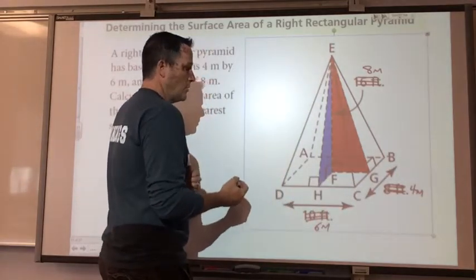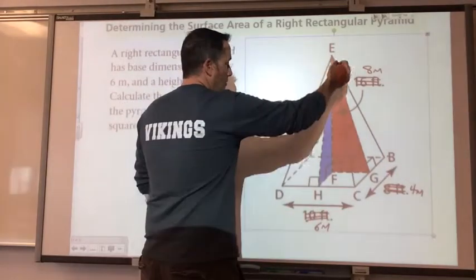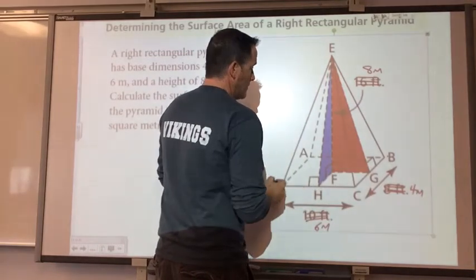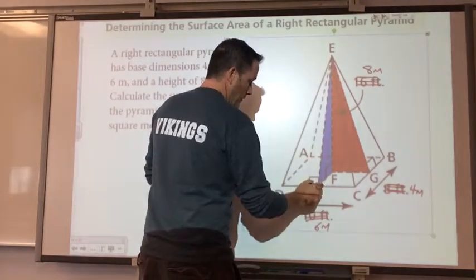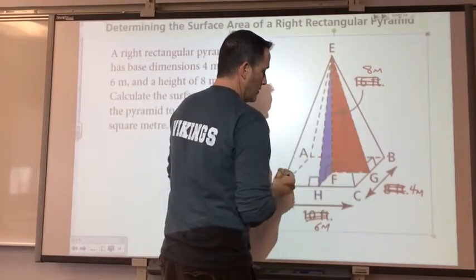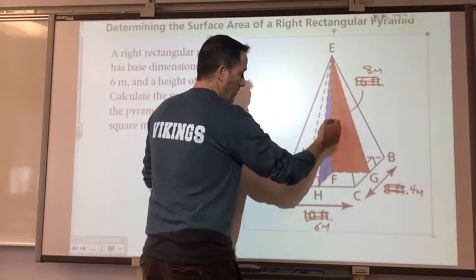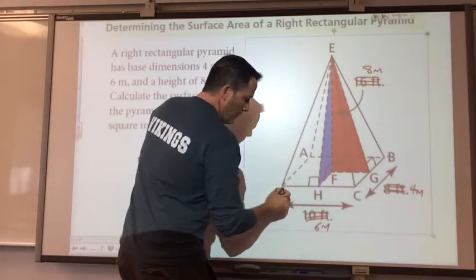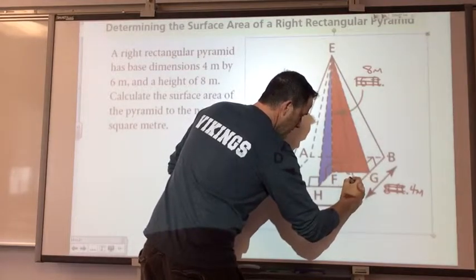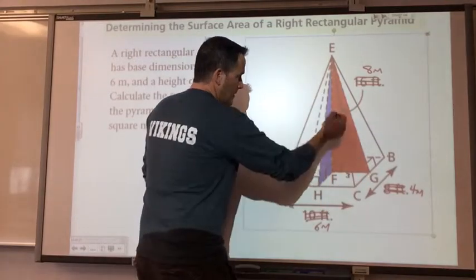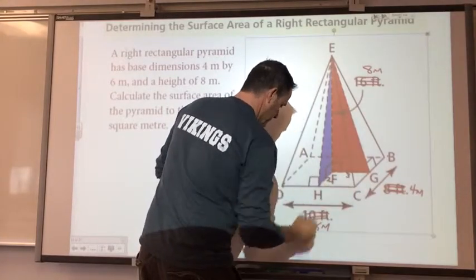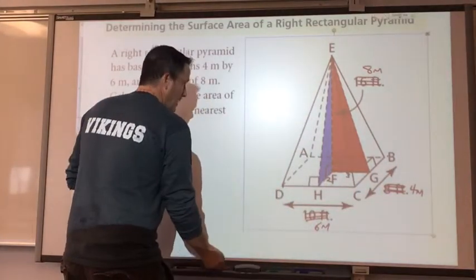So what we need to do to find the surface area, we don't know the slant height for this or the slant height for this. That's why you have the two different colored triangles, because right now we have a height of 8. We have this measurement of 6 here, so this little measurement right there is 3. And this little measurement here is going to be half of 4, or 2. So what I'll do is I'll do them in different colors.